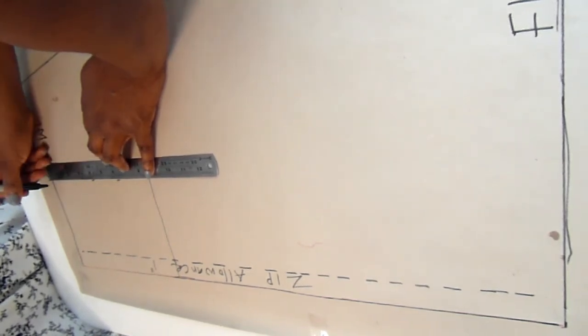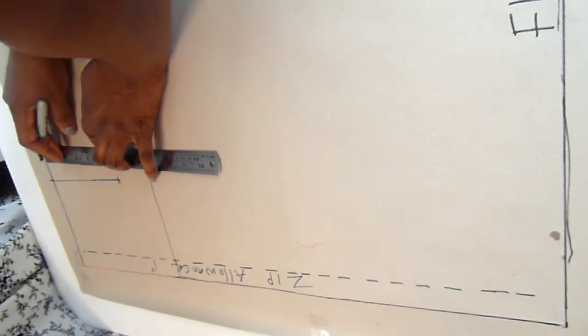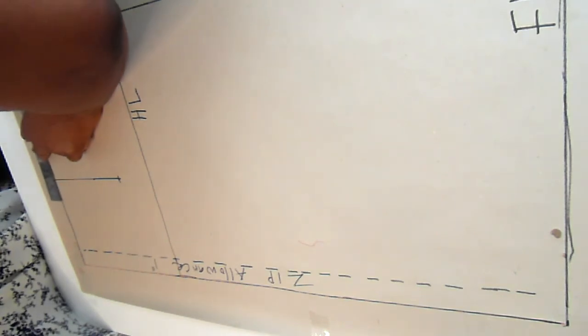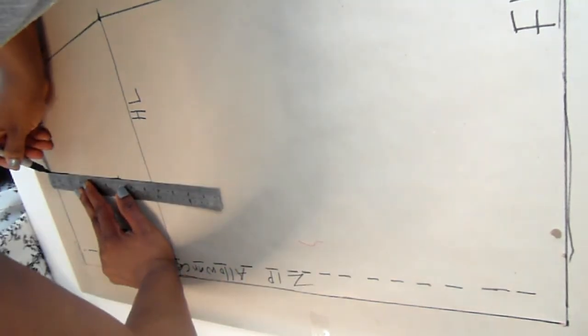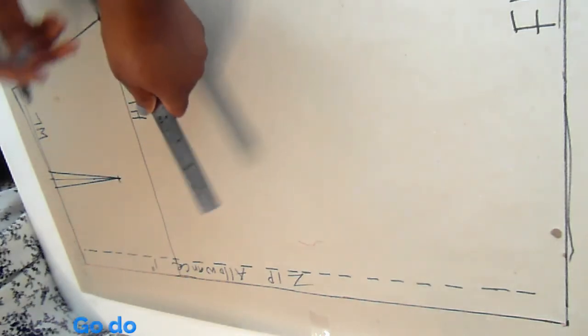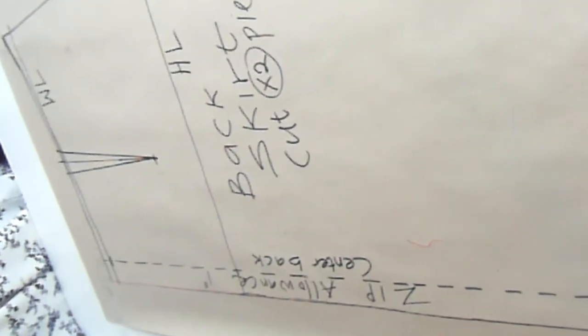For the back dart: my dart point is 4.25 inches using the nipple-to-nipple distance, and the dart length is 6 inches. The dart width is 1 inch — half inch on each side of the line. Follow the illustration to draw the dart. Here's the final look of the back skirt with the dart. Curve out the skirt waistline by going down half inch from the broken line point and drawing the curve. Here is the final skirt back pattern with the curve created.